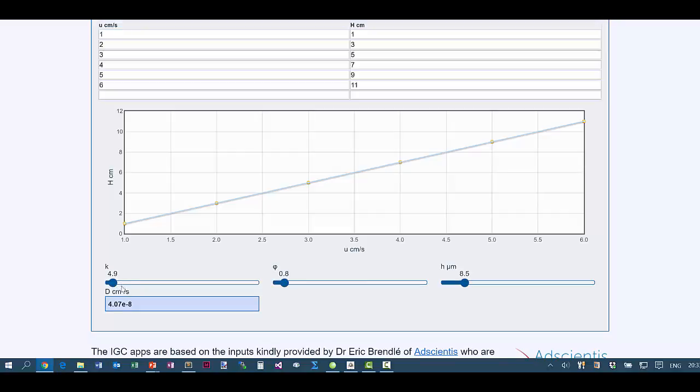So, by just measuring one probe at 1, 2, 3, 4, 5, 6 different flow rates, we've got the diffusion coefficient of toluene in that polymer.